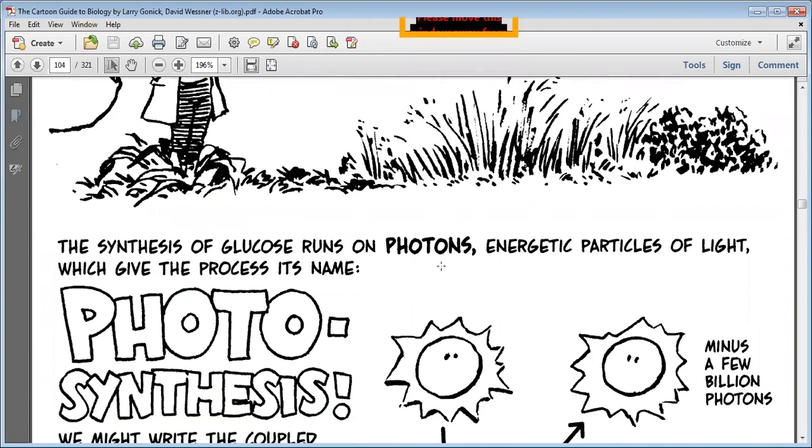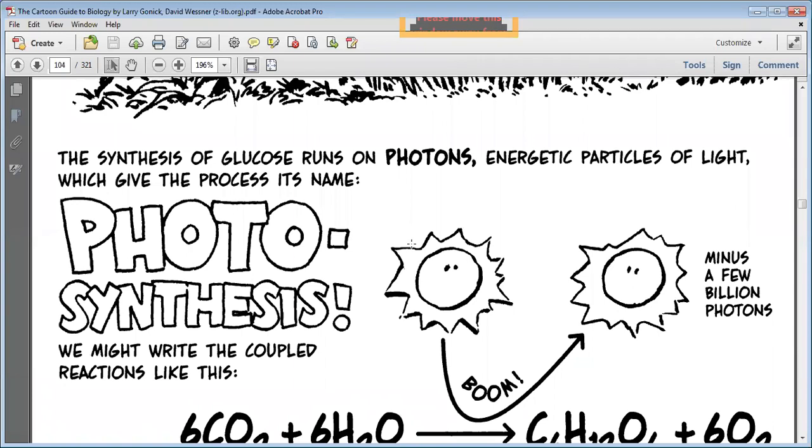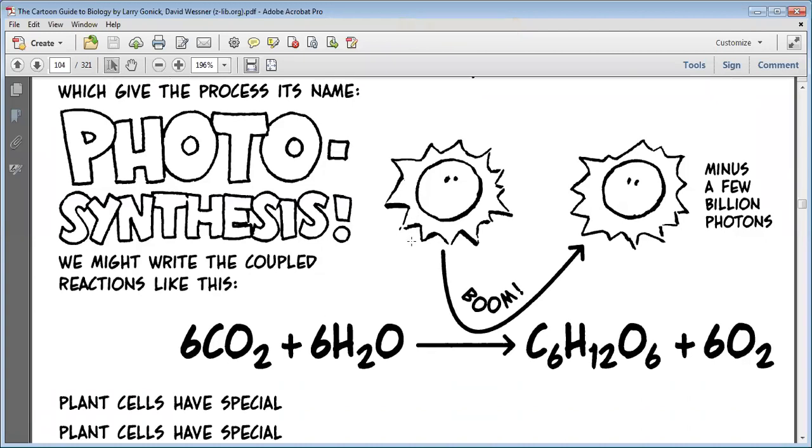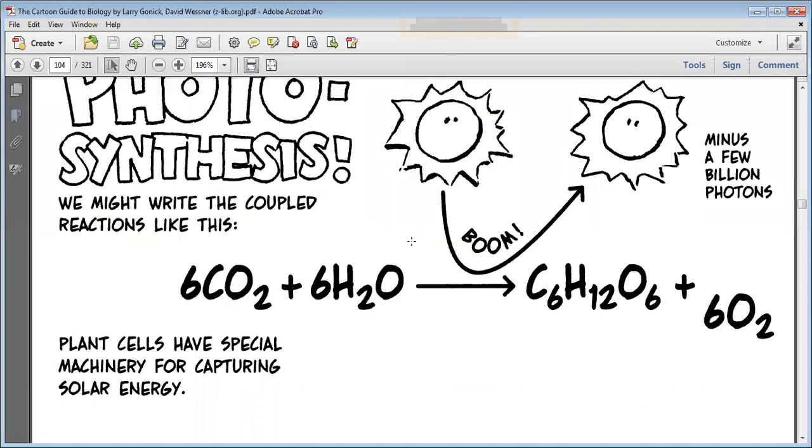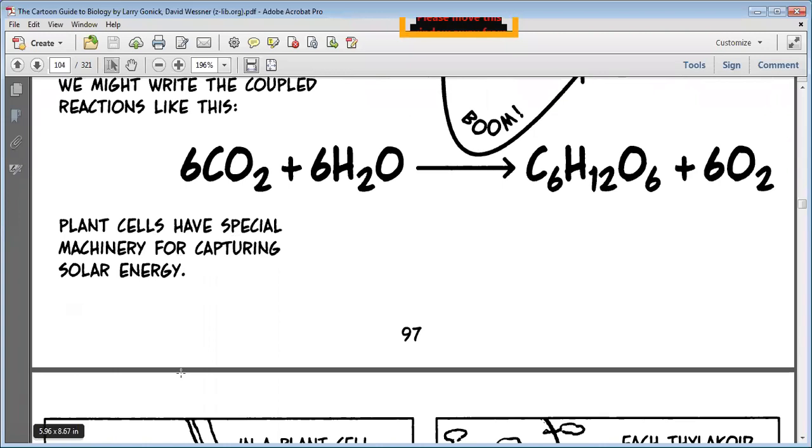I mean the never ending thermonuclear explosion in the sky, our sun. A glow lamp also works. Photons. We are getting light energy from sunlight. The synthesis of glucose runs on photons, energetic particles of light which give the process its name, photosynthesis.